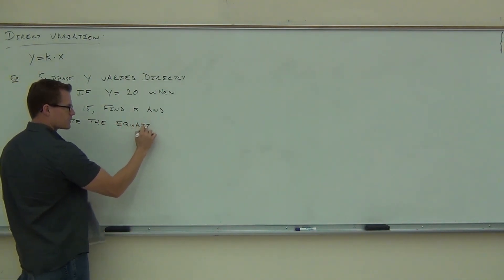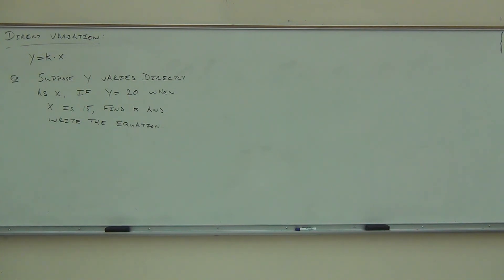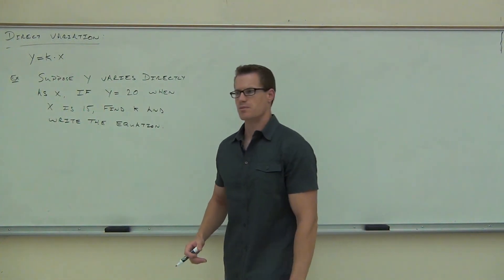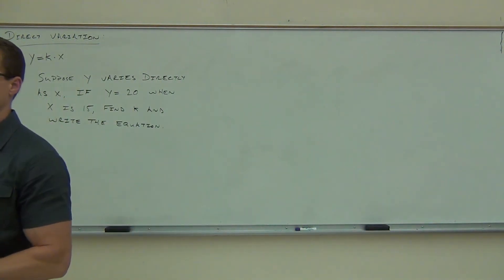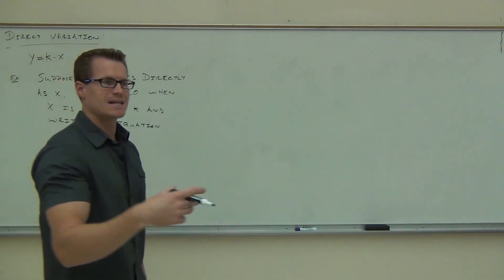So find K and write the direct variation equation. By the way, when we're looking at this thing, what is K? So, once we find it, is it ever going to change for this particular problem? No. So you tell me, what's the first thing we might want to do in our problem here? How are we going to find K? Firstly, do you know what equation we're using? Say that louder. Y equals K times X. Sure, and the reason why we know it's K times, what's the...